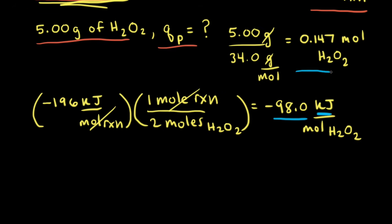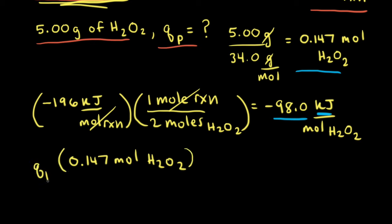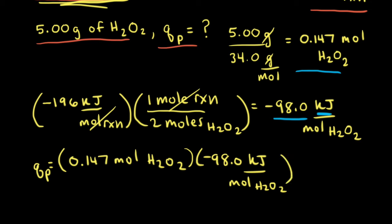Next, we take our 0.147 moles of H₂O₂ — remember, we're trying to calculate the amount of heat that was released — and we multiply that by negative 98.0 kilojoules per mole of H₂O₂. The moles of H₂O₂ cancel out.